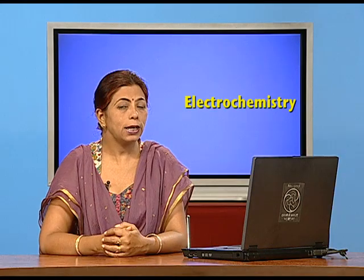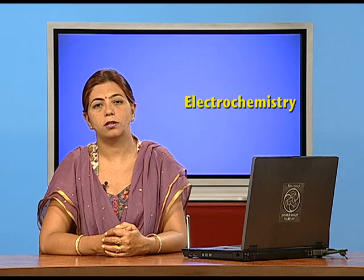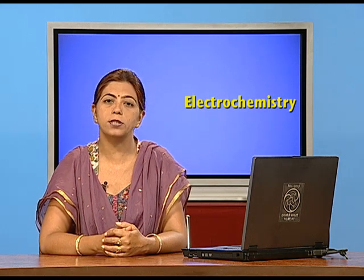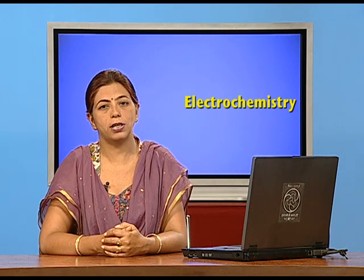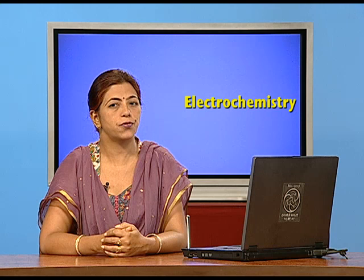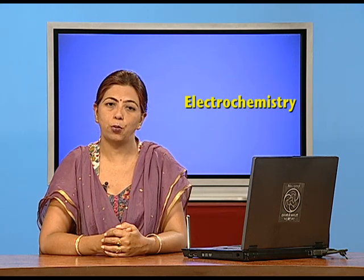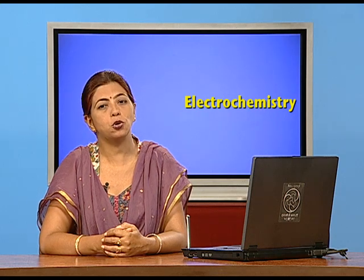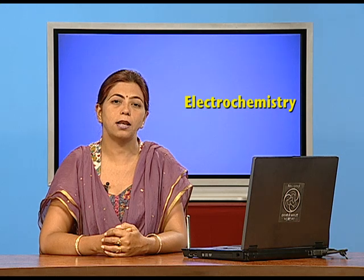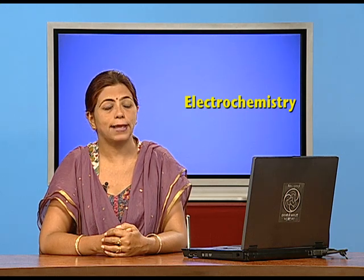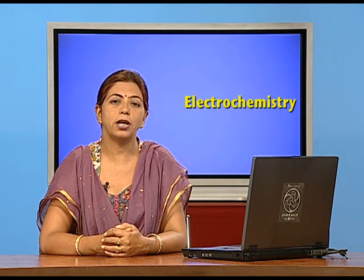Let me explain the working of an electrochemical cell in detail. In an electrochemical cell there are two half cells, also known as the redox couple. One is the reduction half cell and the other is the oxidation half cell. The half cell in which oxidation takes place is known as the oxidation half cell, and the one in which reduction (gain of electrons) takes place is the reduction half cell. Since zinc is losing electrons, it is the oxidation half cell; the copper half cell gains electrons and is the reduction half cell.